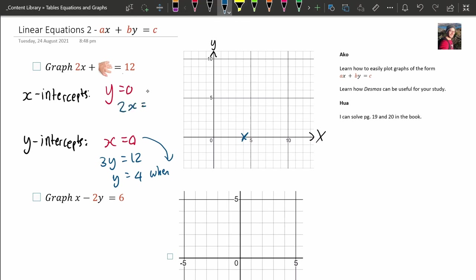Okay, 2X equals 12, which means that X is 4, sorry, X is 6, because you divide both sides by 2, when Y is 0. So when Y is 0, X is 6.